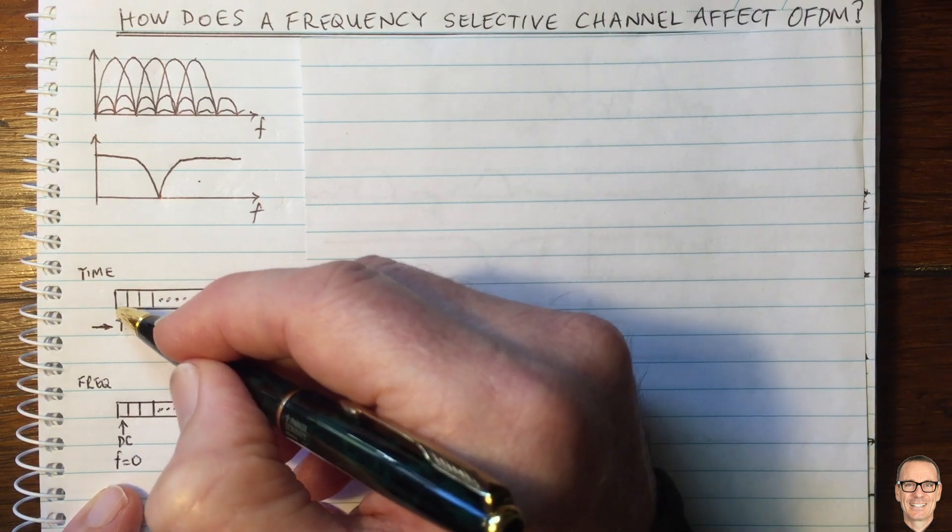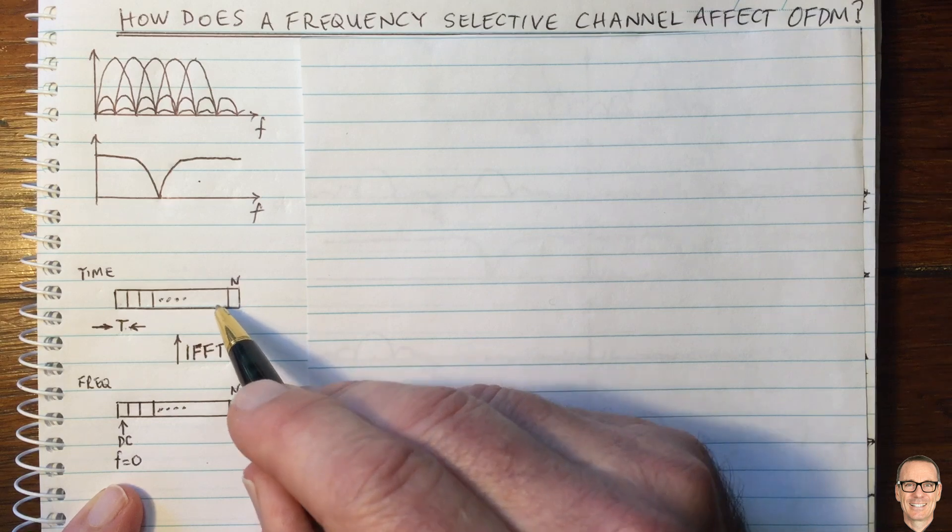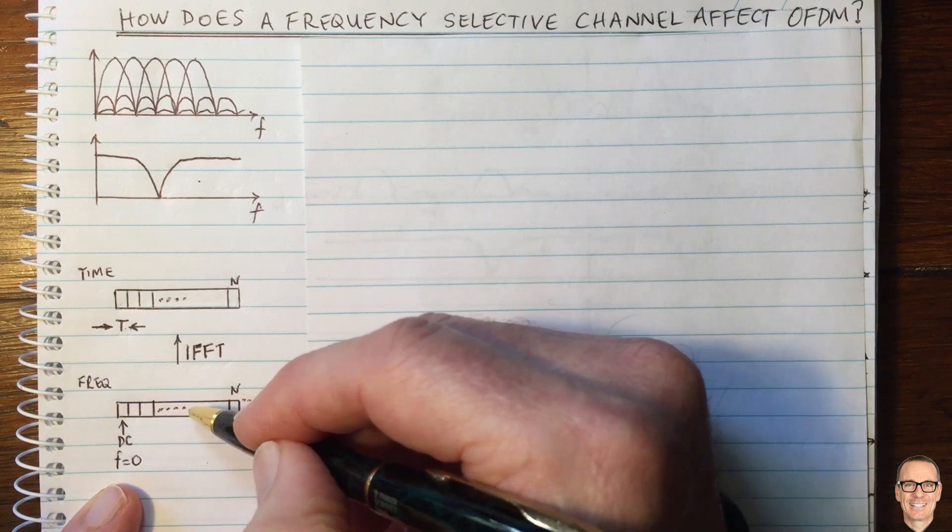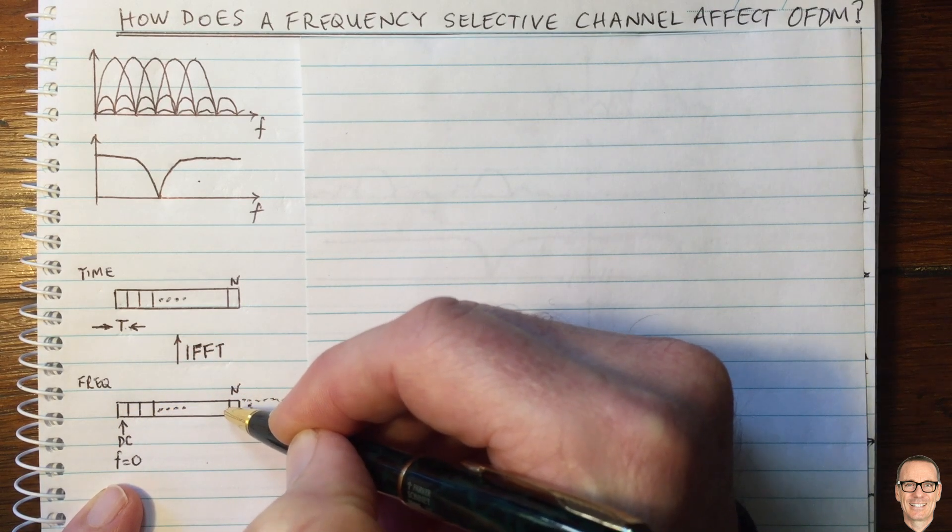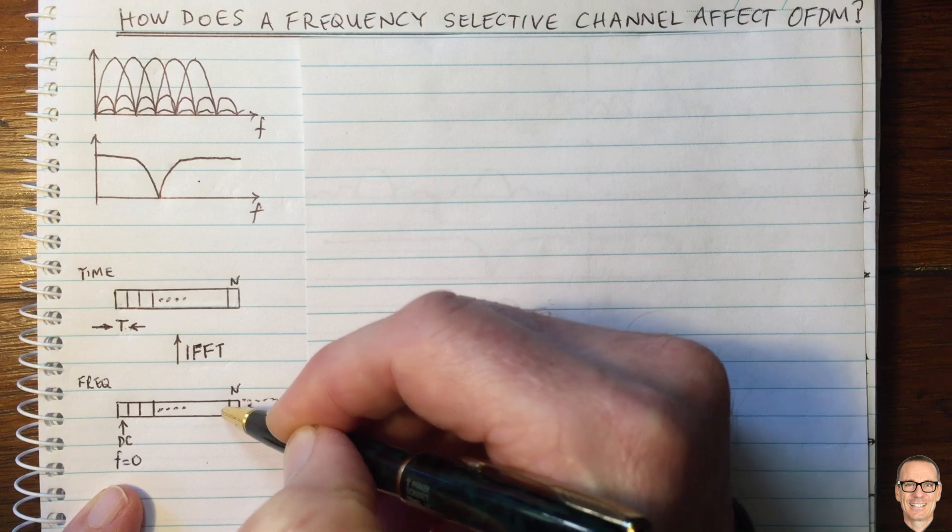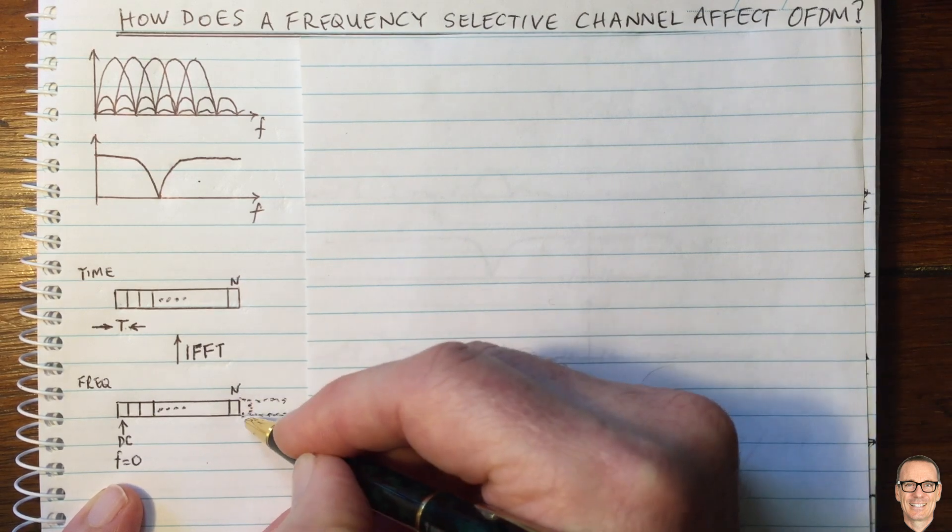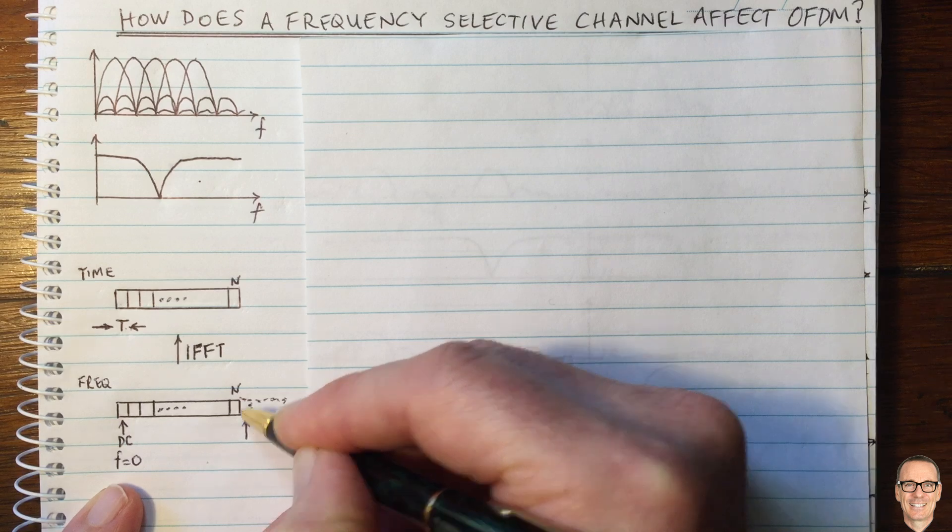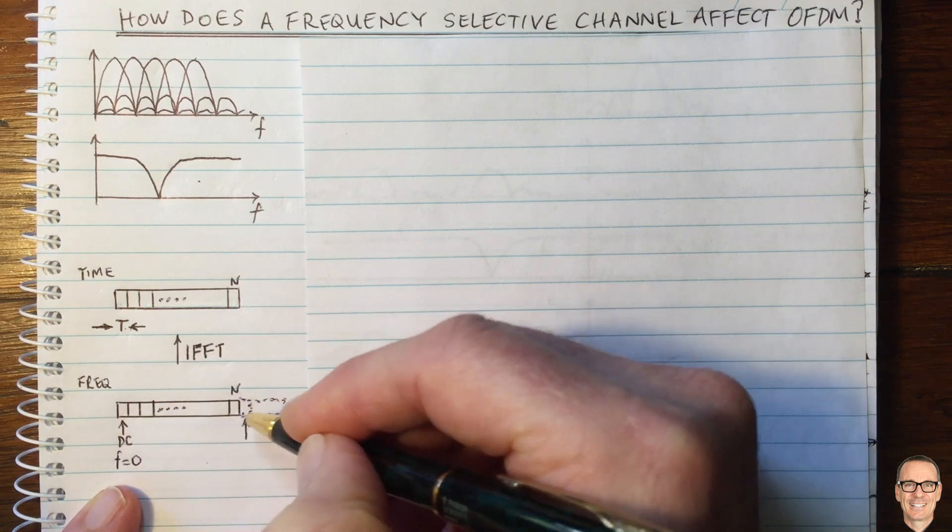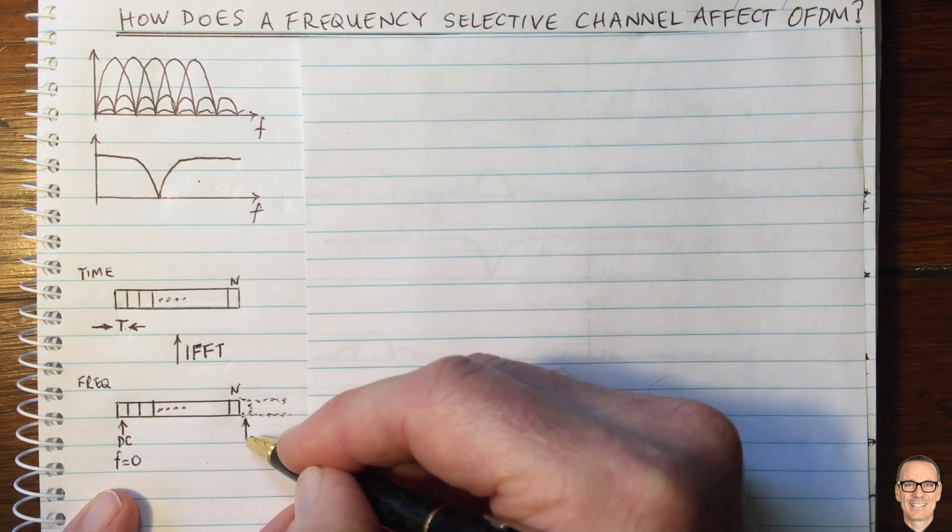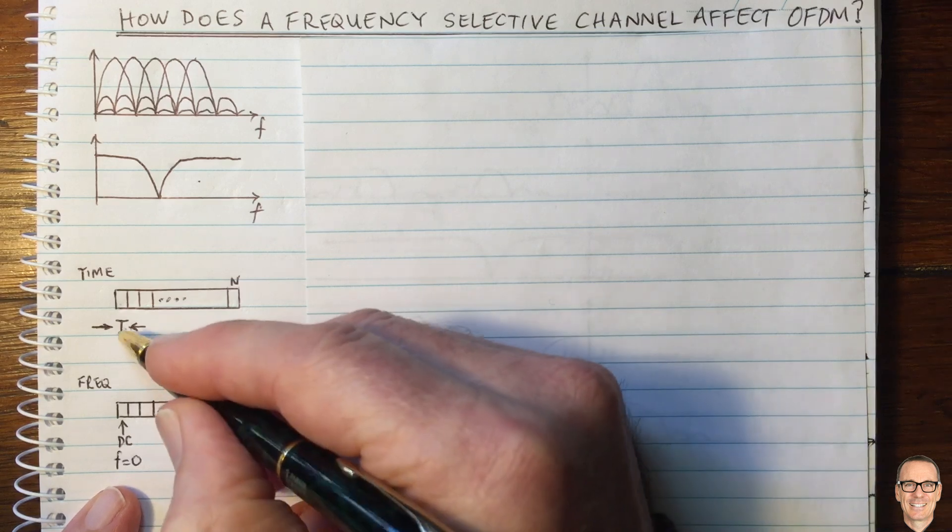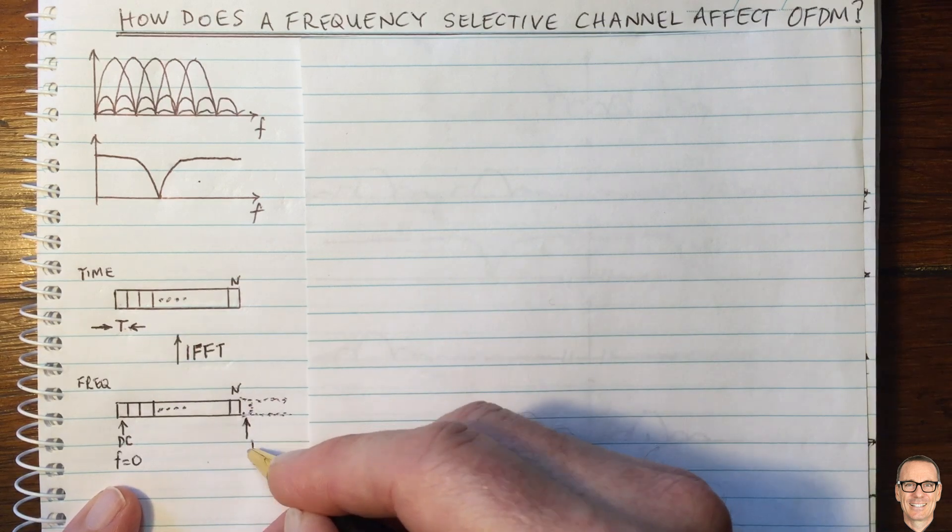Now, since this time domain sequence is discrete time, the frequency domain representation repeats itself. So this vector will repeat itself on the left and on the right. And such that this value here, which would be the first element of the repetition, the frequency that corresponds to is 1 divided by capital T.